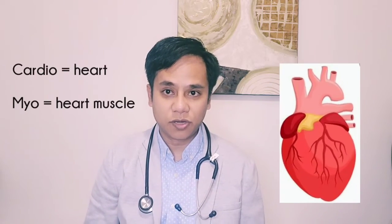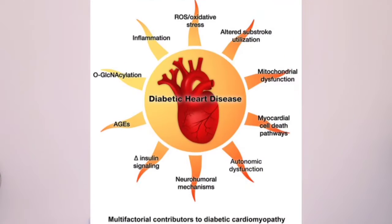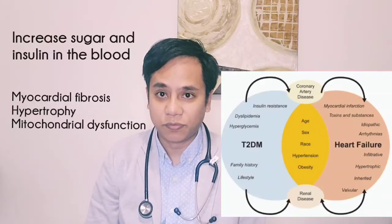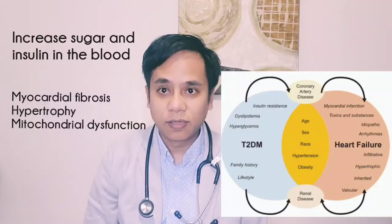The last common diabetes complication I'll discuss briefly is diabetic cardiomyopathy — a diabetes-associated structural change of the heart. Cardiomyopathy refers to abnormalities of the heart muscle. Increased blood sugar and increased insulin in the blood can lead to myocardial fibrosis, hypertrophy, and mitochondrial dysfunction.